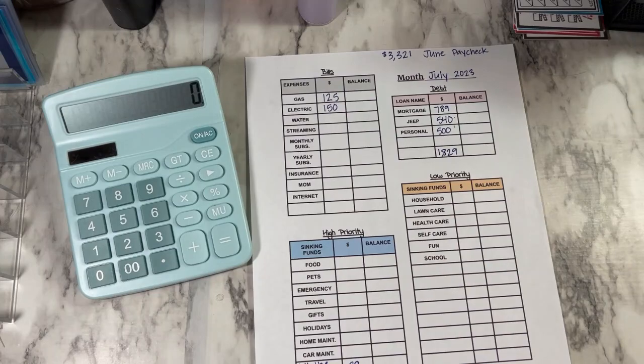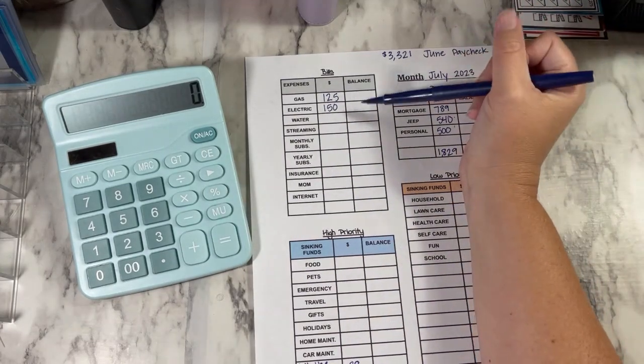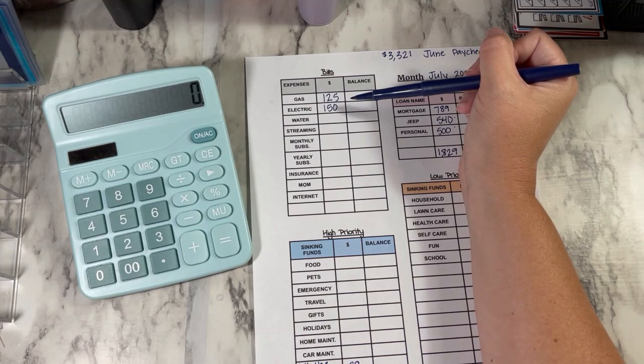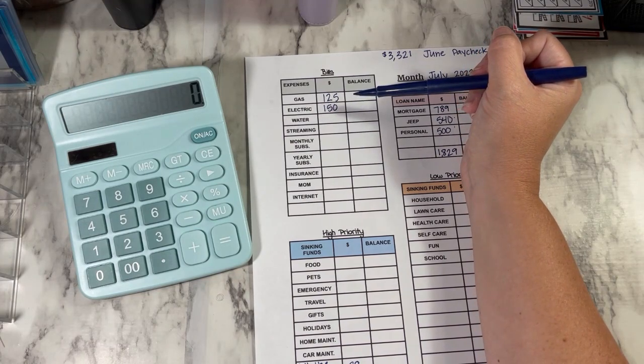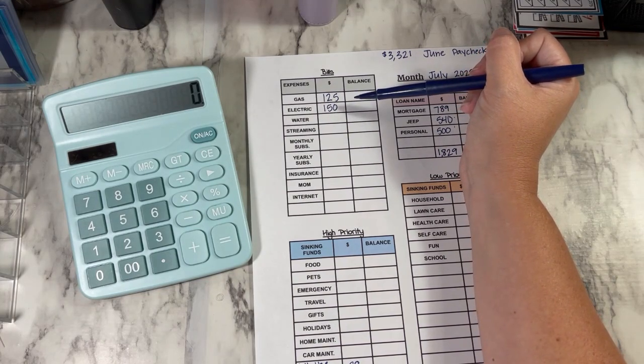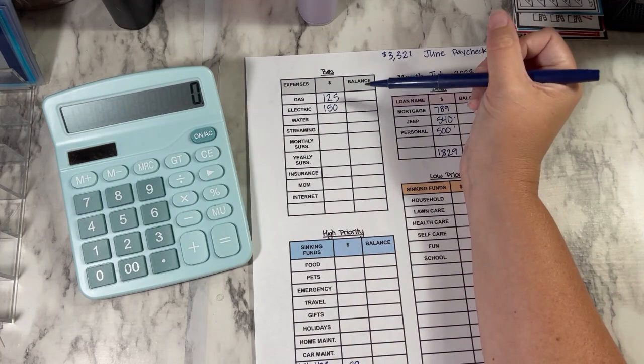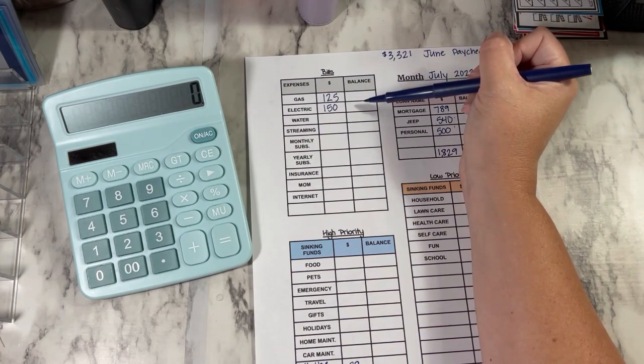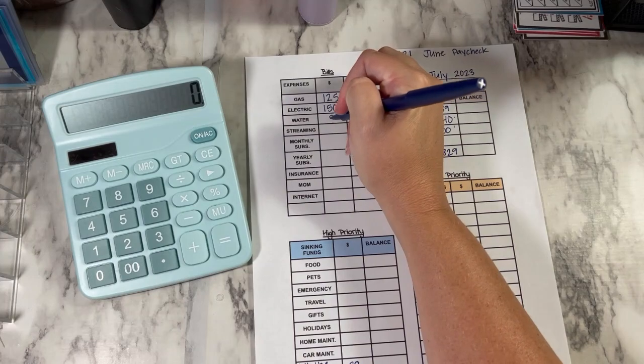Now my electric bill usually is not that much. So I either use the extra towards something else, or I put it into my savings binder that I'm going to get started again here soon. Water, we're going to do $80.